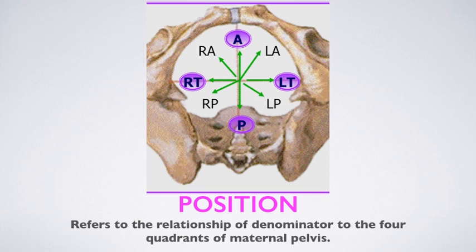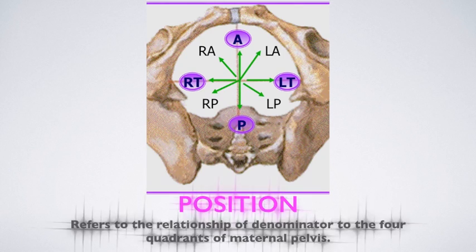Position refers to the relationship of the denominator to the four coordinates of the maternal pelvis. In vertex presentation, the occiput can be in V1 position, that is left occipital anterior; V2, left occipital posterior; V3, right occipital posterior; and V4, right occipital anterior position.